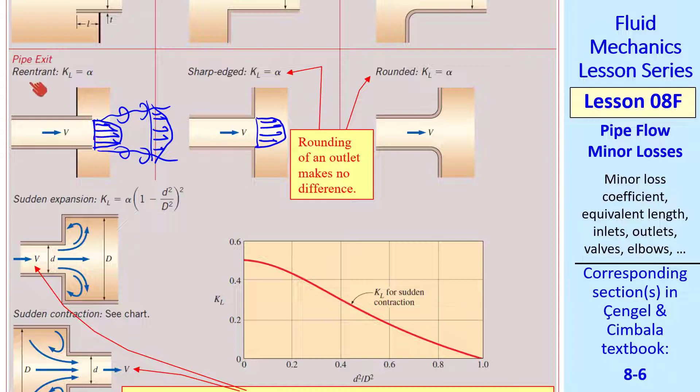It turns out that whether the pipe exit is re-entrant, sharp-edged, or rounded, we get the same kind of jet effect and dissipation. So KL is alpha, the kinetic energy correction factor for all three of these cases.